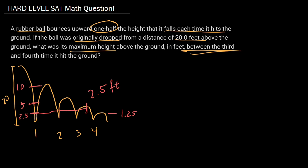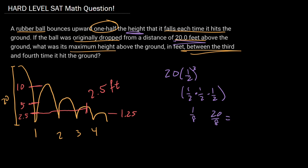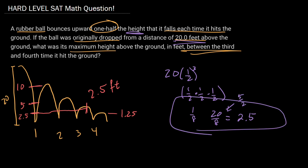Now if you didn't draw this picture, how could you solve it? I recommend drawing the picture — it's definitely the best way to do it. But we know that it's bouncing upward one half every single time, so you could just do 20 times one half to the power of 3. We get one half times one half times one half, so 20 divided by 8 is equal to 2.5. I can just divide both sides by 4 and get 5 over 2. Okay, that's our answer. Thank you.